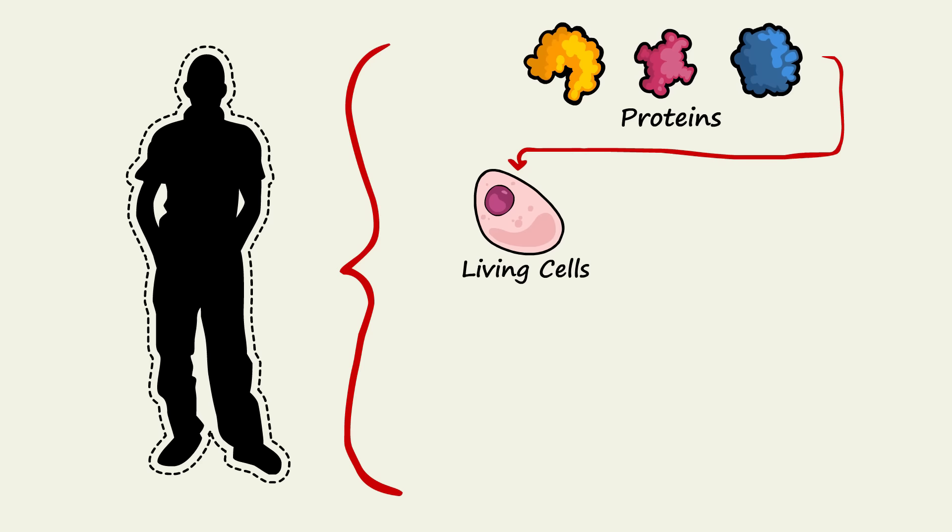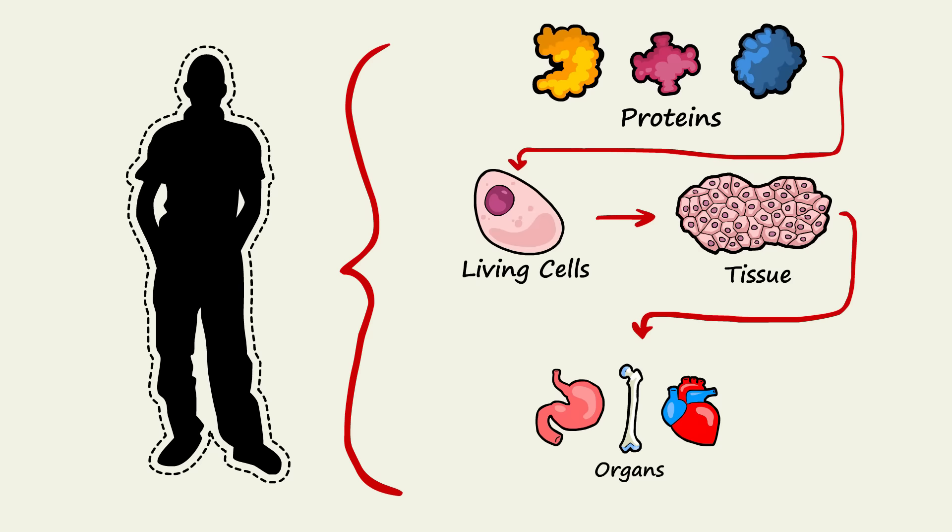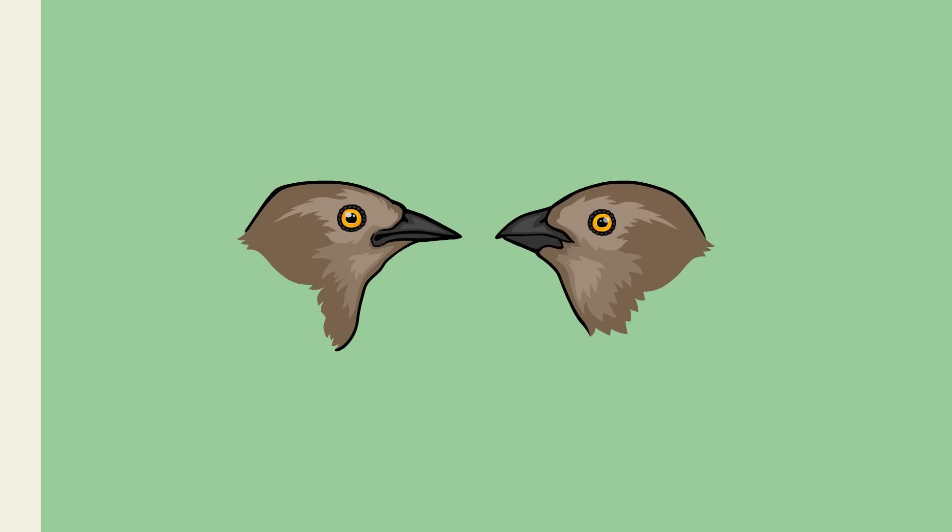In multi-celled creatures like ourselves, proteins — which are coded for by genes — interact with other proteins and molecules to make up living cells. Cells make up tissues, tissues make up organs, and organs ultimately make up entire living creatures.